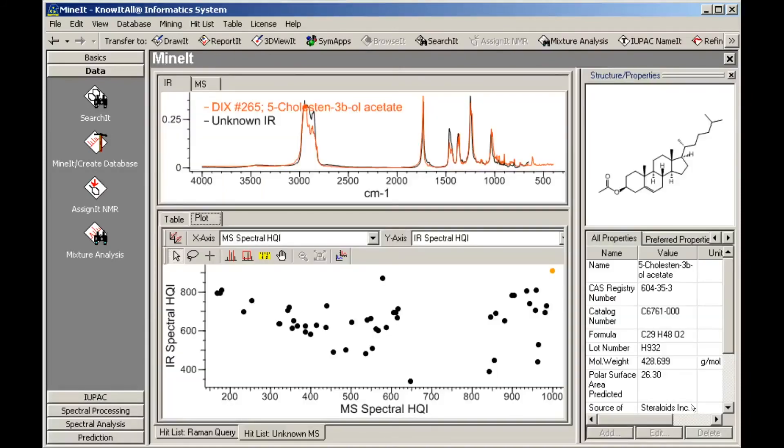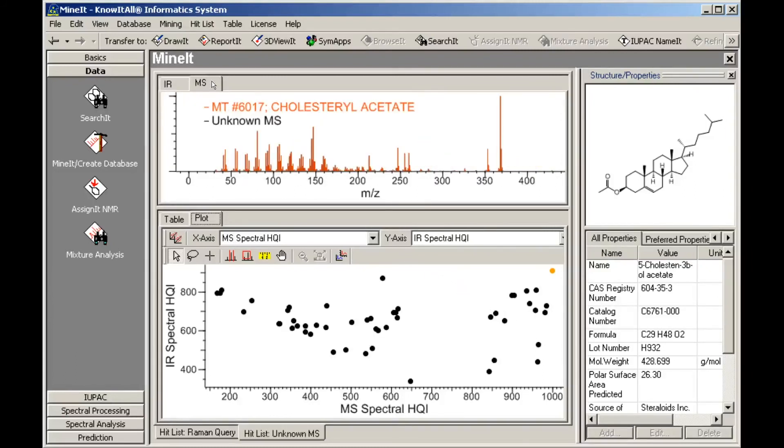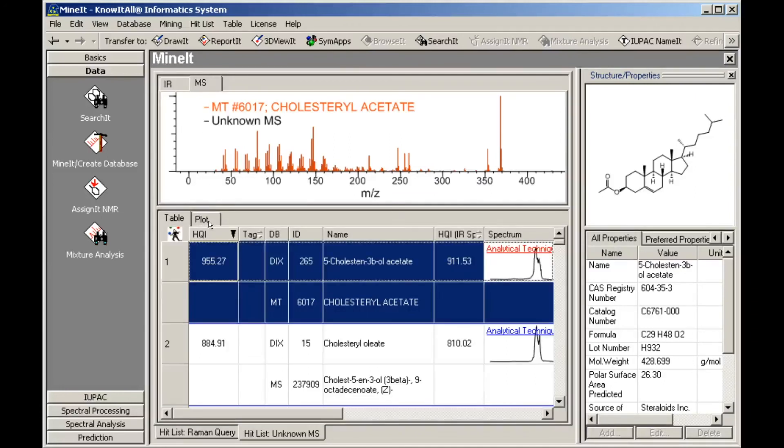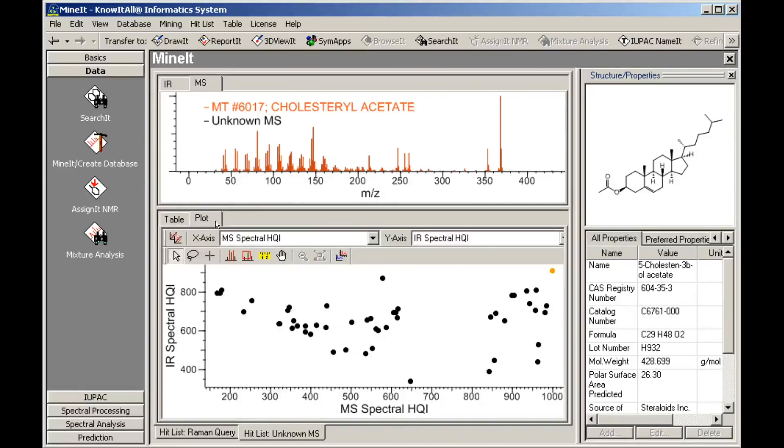The results are displayed in the Minit applications Plot tab, where the point with the highest HQI values is automatically selected. We can view the other spectra associated with the selected hit, and view the database entries by clicking the Table tab. We can select any point in the HQI plot and view corresponding spectra and database entries.